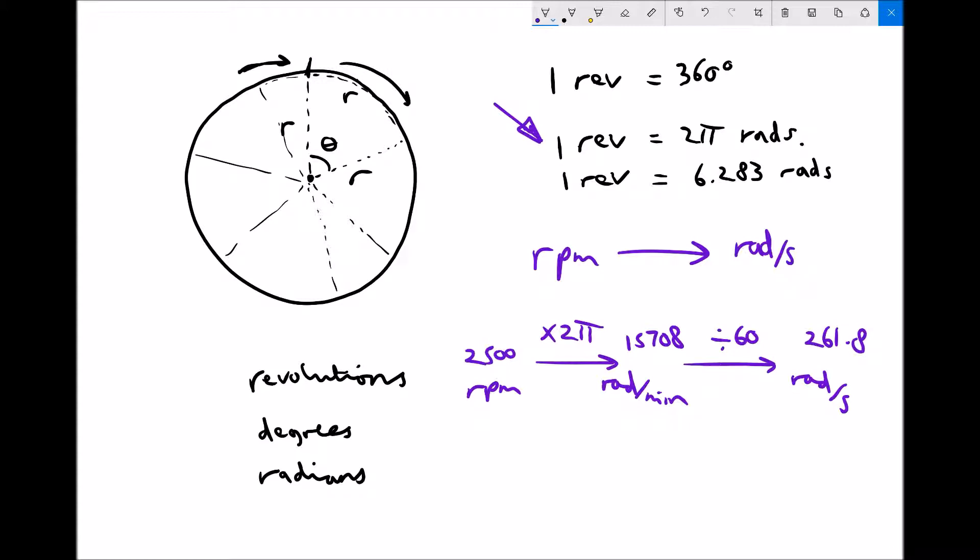So once again it's a two step process. First of all we're converting from revolutions to radians, and then we're converting from minutes to seconds. To get from revolutions to radians we times by 2π, and then to get from minutes to seconds we divide by 60.